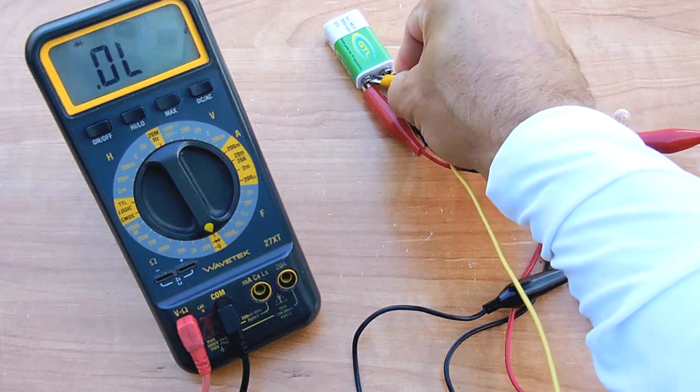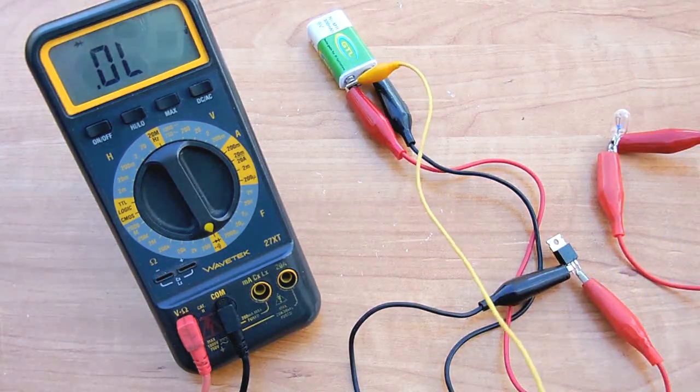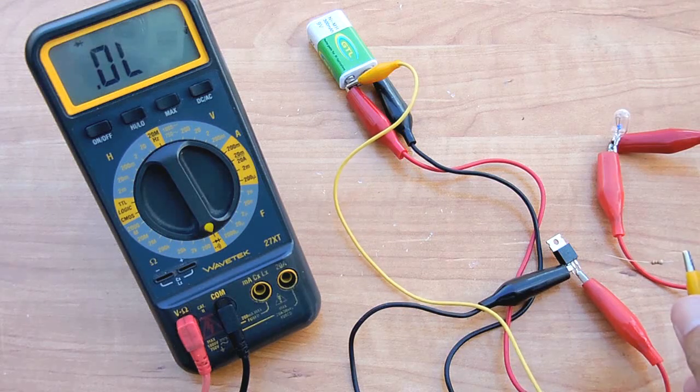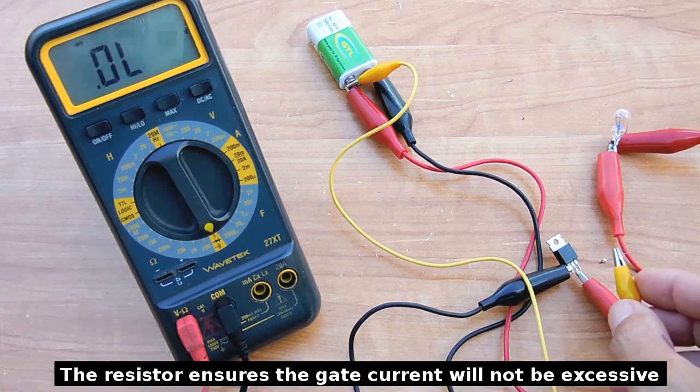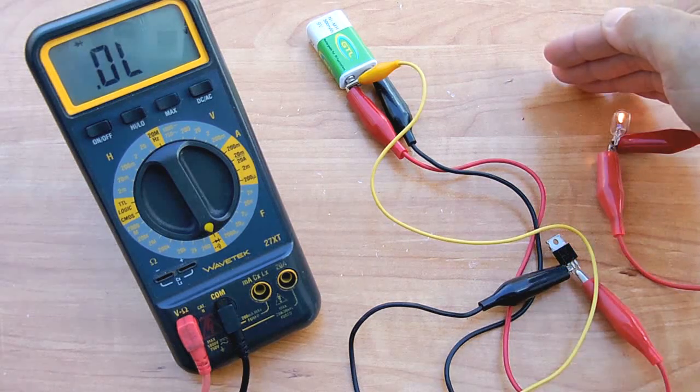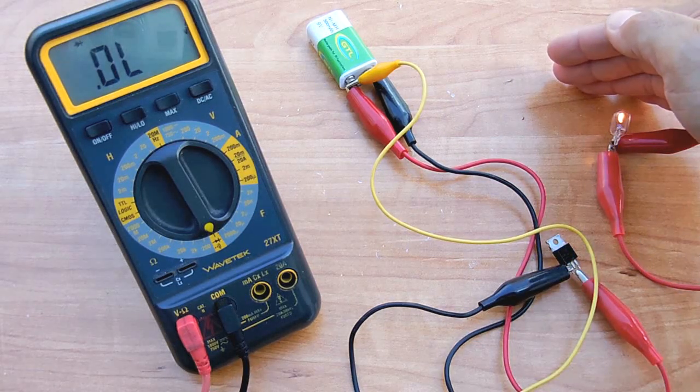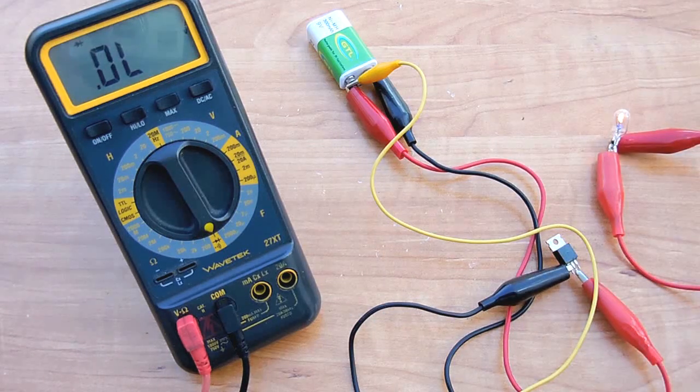Now as soon as I apply the gate voltage you'll see the load come on. All right, so right there you can see the lamp is running.